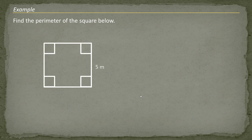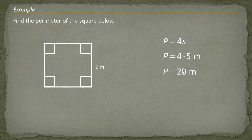In this example, we're going to find the perimeter of the square. We're only given one side, but remember that all sides of a square are equal. So the perimeter is 4 times that side length. The side length is 5, and 4 times 5 is 20. The perimeter of this square is 20 meters.